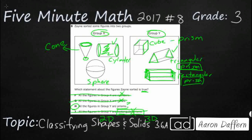This just happens to have all square faces. So even though we call it a cube, it's a special type of rectangular prism. So our answer is going to be H. All figures in Group Y are prisms.